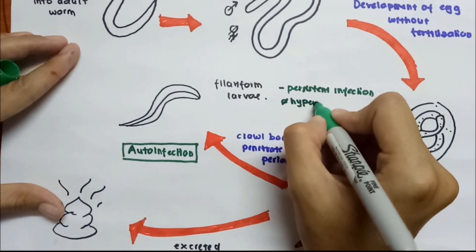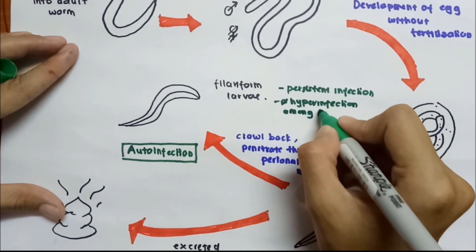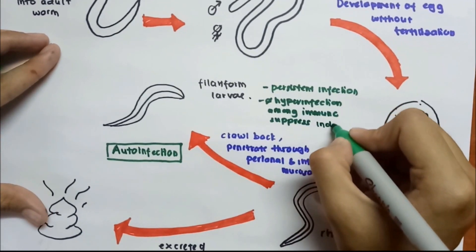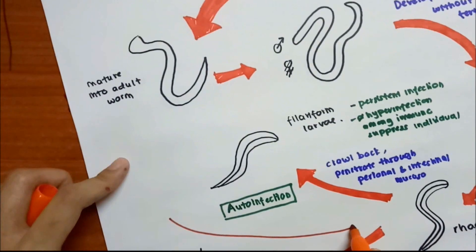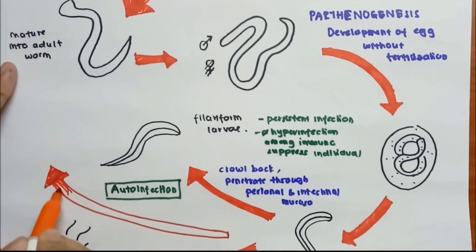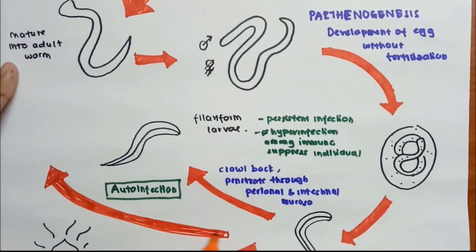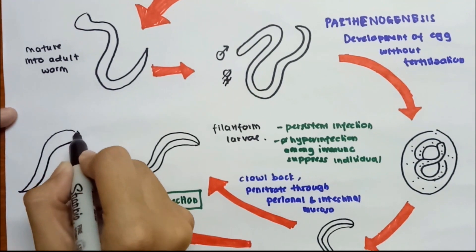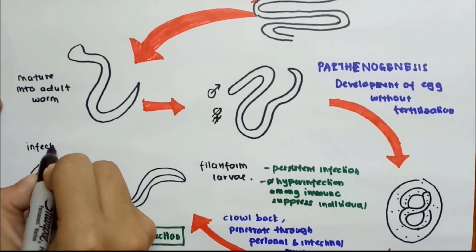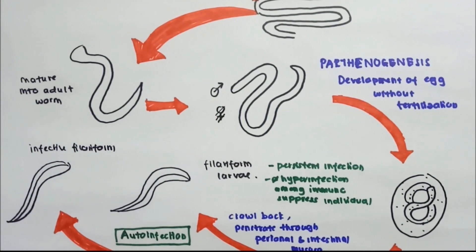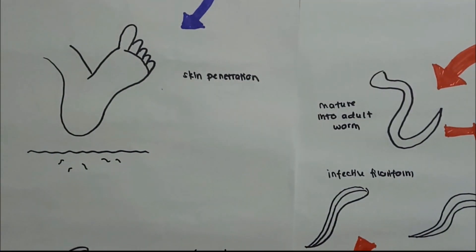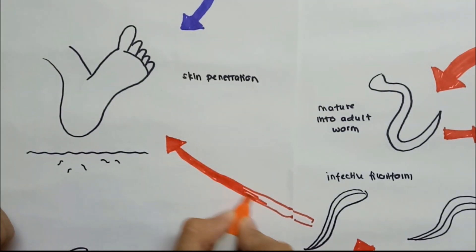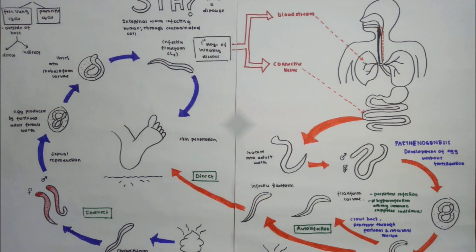Auto-infection of Strongyloides stercoralis explains persistent infection for many years and can cause hyper-infection in immunosuppressed individuals. Auto-infection can only occur if the rhabditiform larvae are not excreted into the stool. If they are excreted, they proceed to the free living cycle — specifically the direct route, where rhabditiform larvae in the excreted stool develop directly into filariform larvae, penetrate human host skin, and cause infection. These are the key steps in the life cycle of Strongyloides stercoralis.